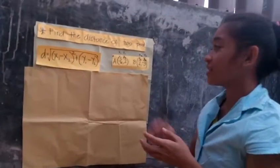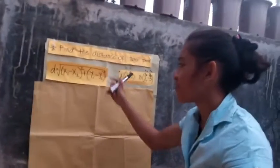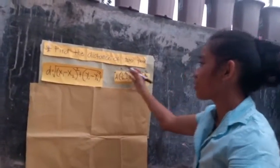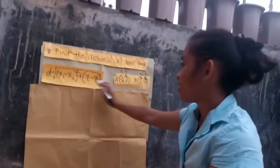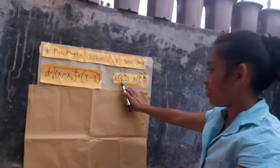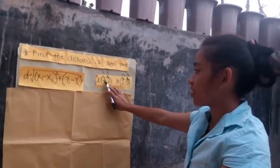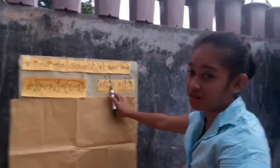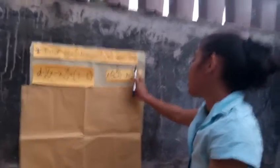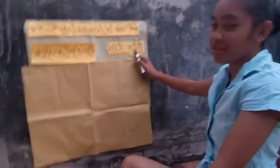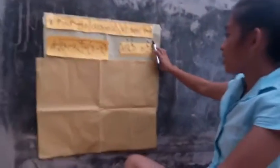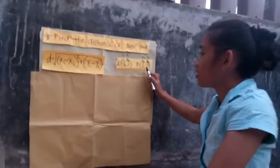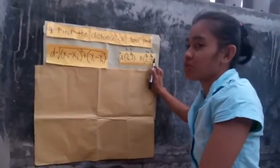For my second example about distance: find the distance of two points where x₁ is negative 6, y₁ is 2, x₂ is 2, and y₂ is negative 3.